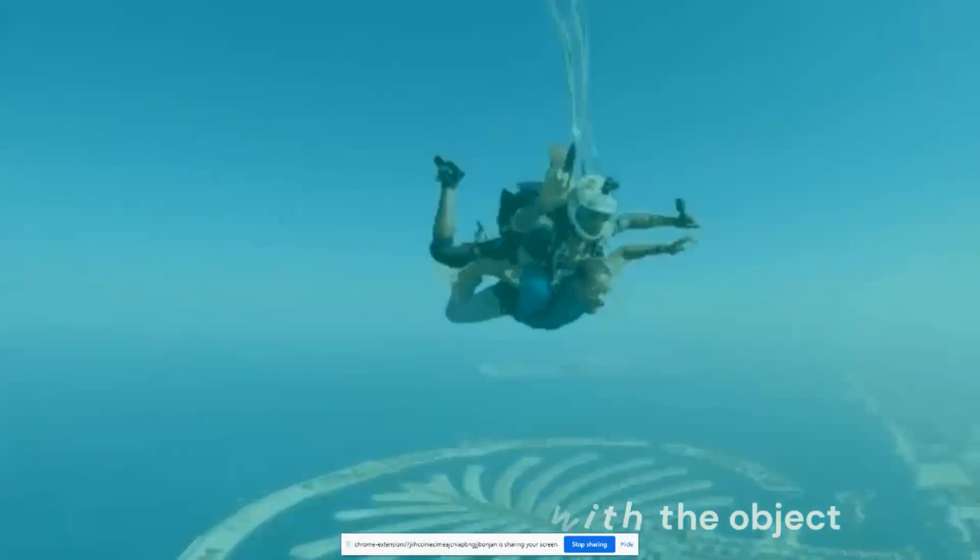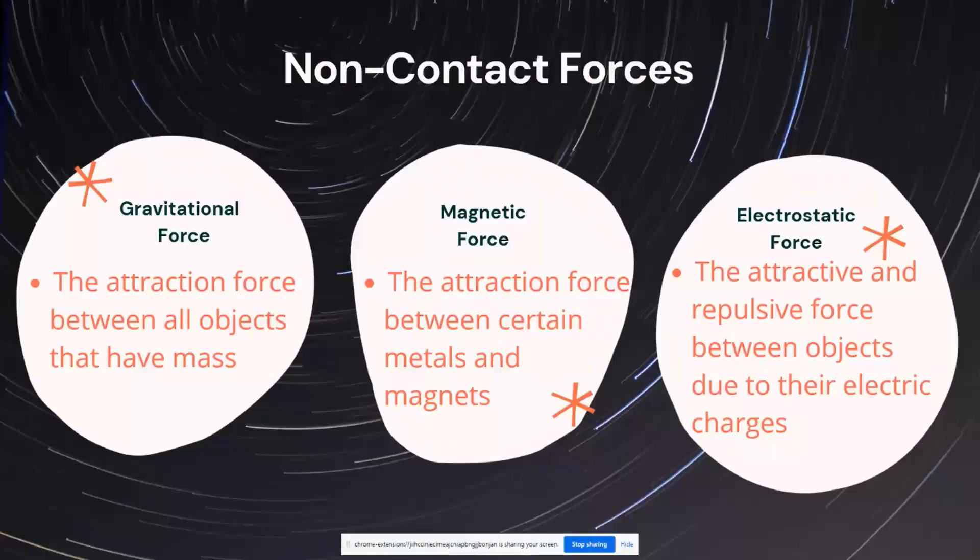So as we look at non-contact forces, we have gravitational force, magnetic force, or electrostatic force. Gravitational force is basically the attraction between all objects that have mass. So when you jump up, you come back down because you have an attraction to the earth below you.